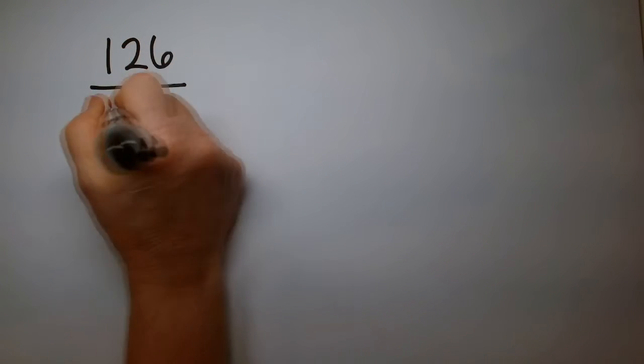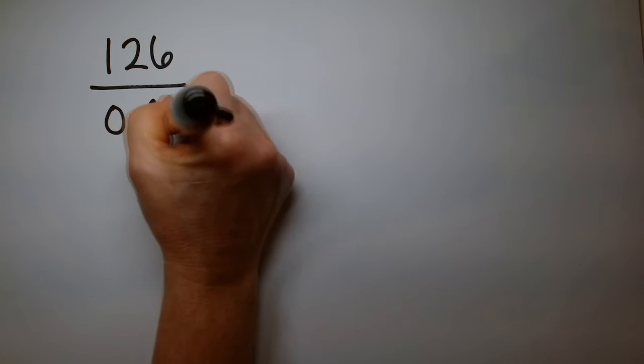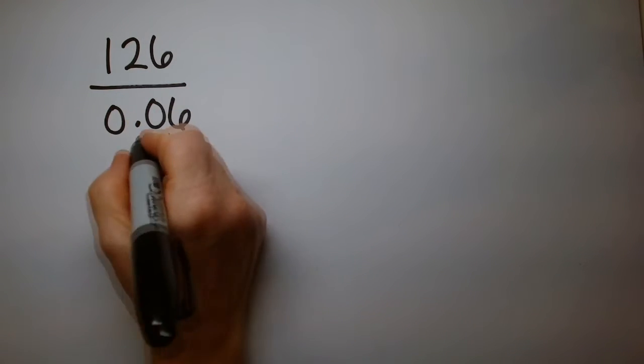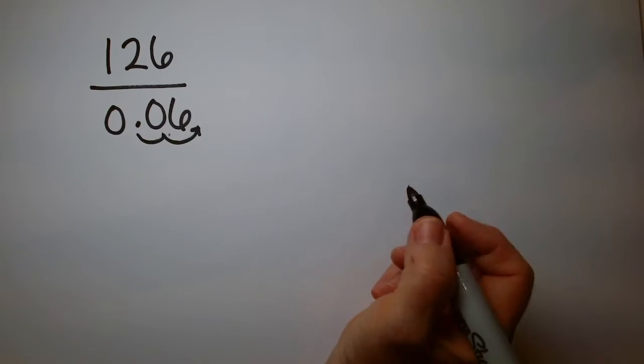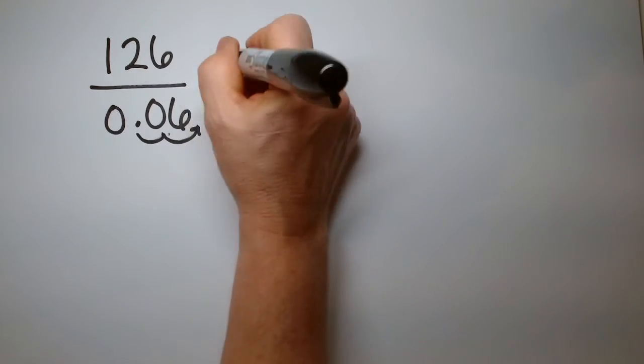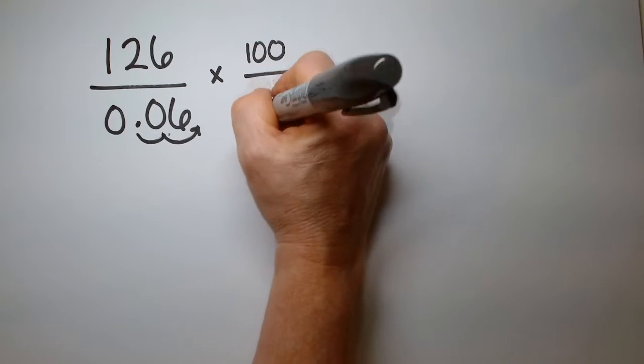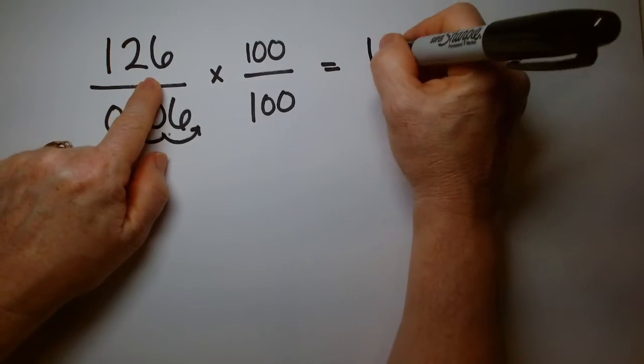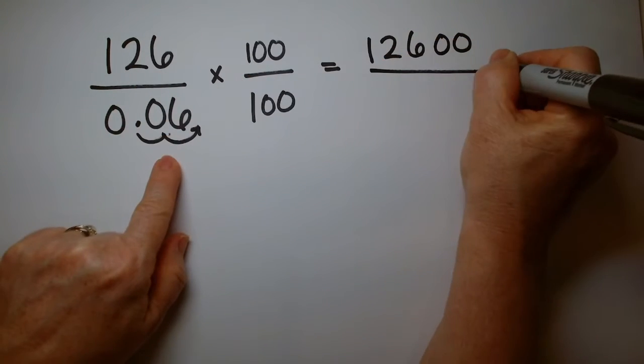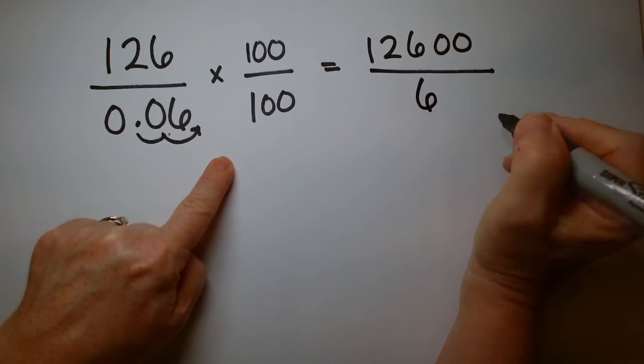Suppose I have 126 divided by 0.06. In this case, we're going to need to multiply by 100 to turn that 0.06 into a whole number. So multiply by 100 over 100. On the top, I'm going to have 12600. On the bottom, I'm going to have 6.